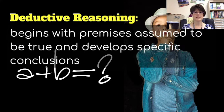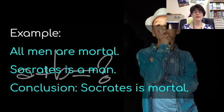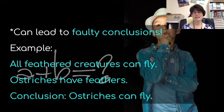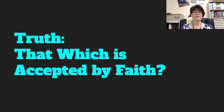There's also deductive reasoning. This begins with premises assumed to be true and develops a specific conclusion. An example is: all men are mortal; Socrates is a man; therefore Socrates is mortal. However, this can lead to faulty conclusions. For example, we might say all feathered creatures can fly, ostriches have feathers, so the conclusion would be that ostriches can fly — and we know that is not true. So even logical reasoning does not always produce truth.